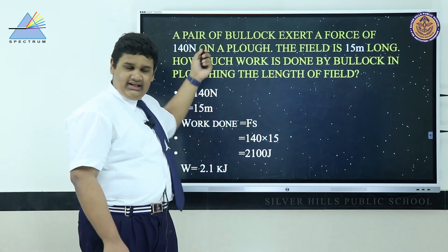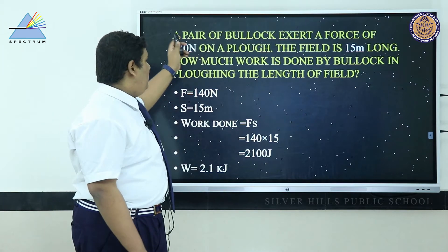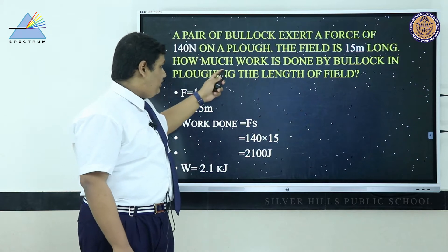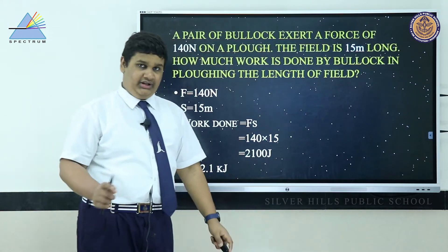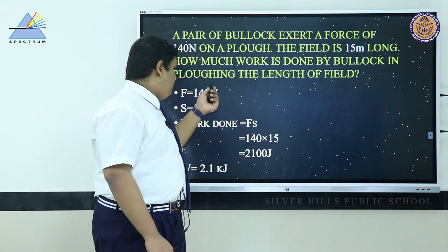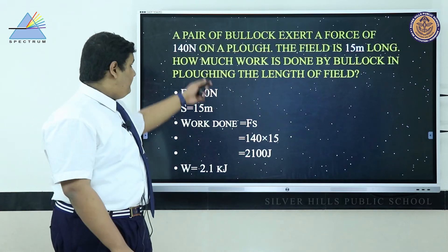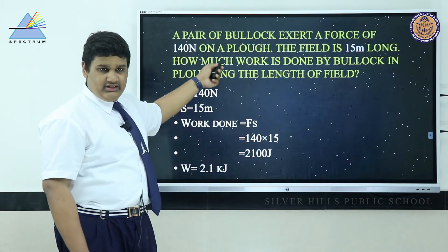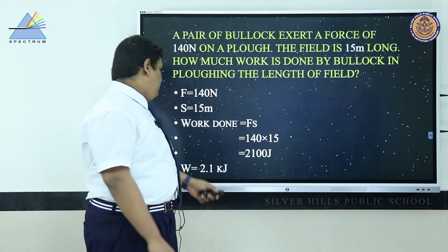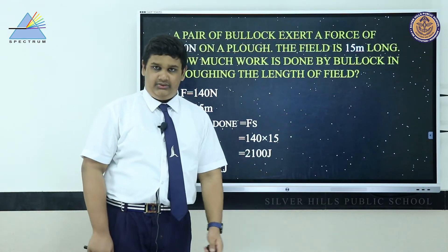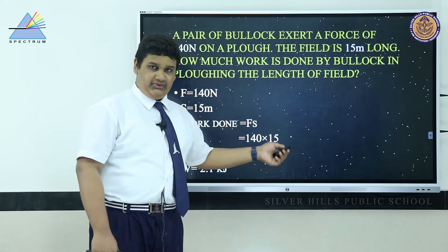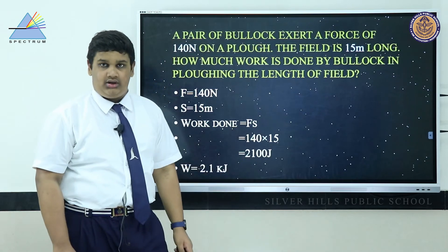Let's have a look at some questions. A pair of bullocks exert a force of 140 Newton on a plough. The field is 15 meters long. How much work is done by the bullocks in ploughing the length of the field? We have force = 140 N and displacement = 15 m. Work done = force × displacement = 140 × 15 = 2100 joule.